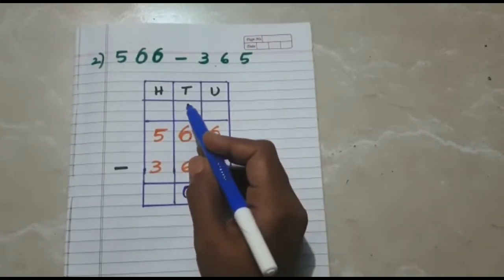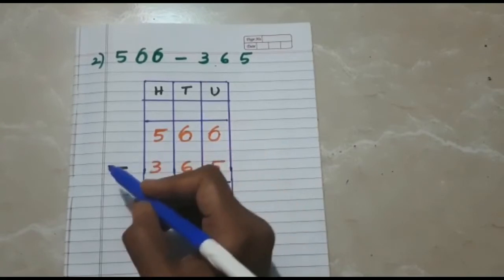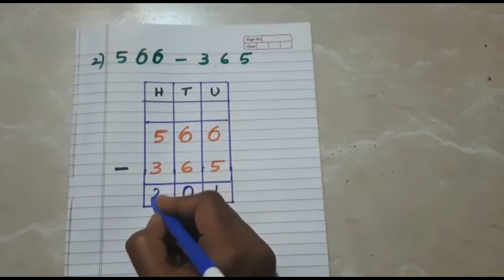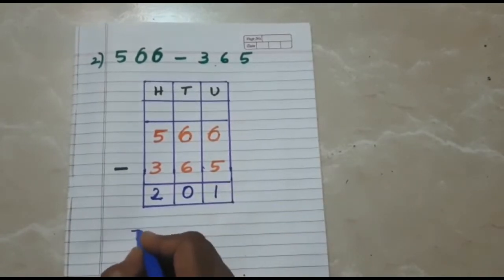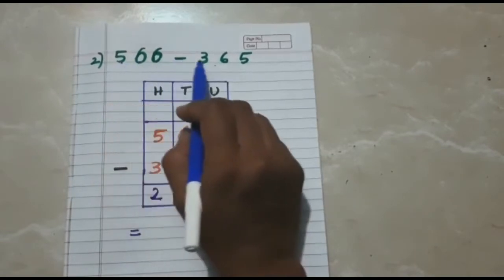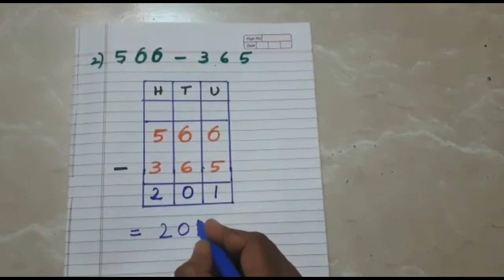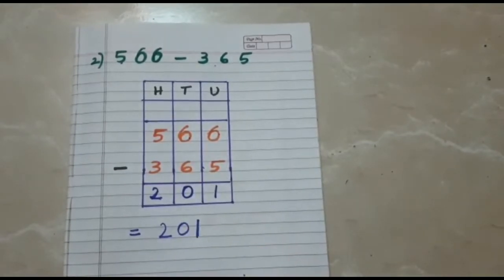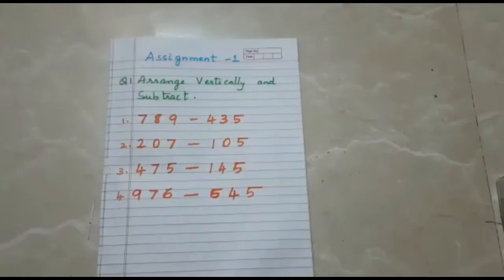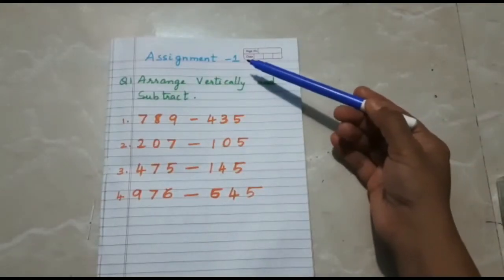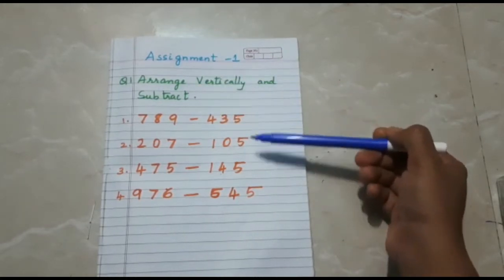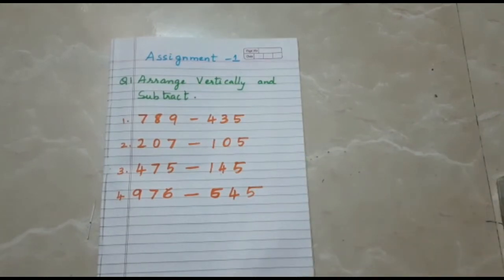Next, as we finish with the tens, we move on to hundreds. 5 minus 3 is 2. So our difference between 566 and 365 is 201. Now students, here I have given Assignment Number 1: arrange vertically and subtract, with 4 questions. These 4 questions and the 2 questions I explained must be there in your classwork.